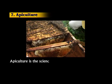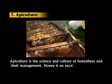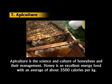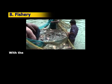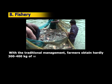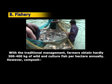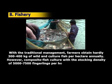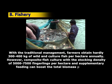Next is apiculture. Apiculture is the science and culture of honeybees and their management. Honey is an excellent energy food with an average of about 3500 calories per kg. Next is fishery. With traditional management, farmers obtain hardly 300 to 400 kg of wild and culture fish per hectare annually. However, composite fish culture with a stocking density of 5000 to 7500 fingerlings per hectare and supplementary feeding can boost the total biomass production.